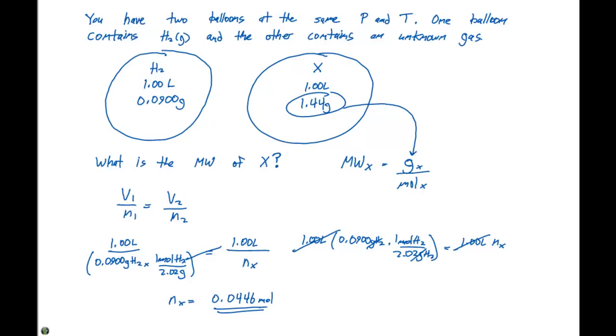We said the molecular weight of X is going to equal the grams of X, which is 1.44 grams, which was given right up here, divided by 0.0446 moles. If we do that calculation, our molecular weight of X is going to be 32.32 grams per mole.